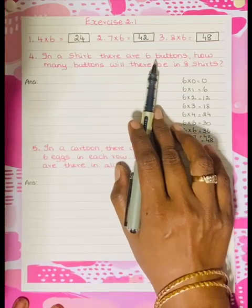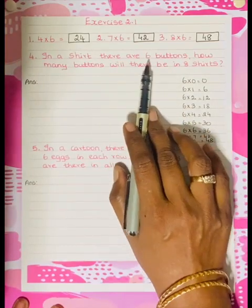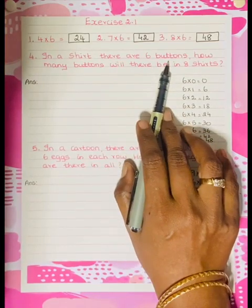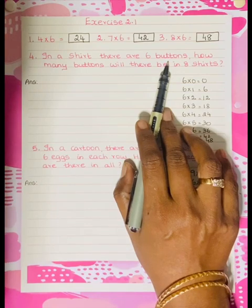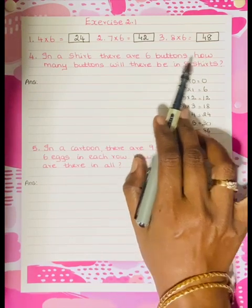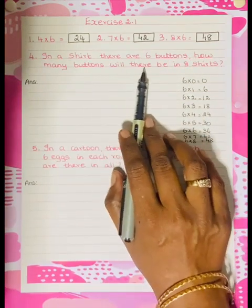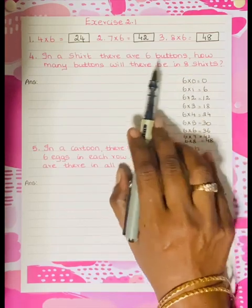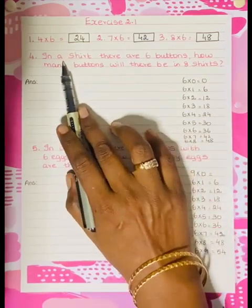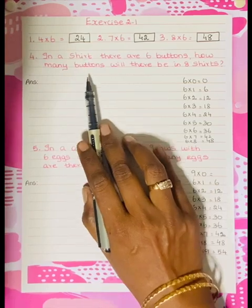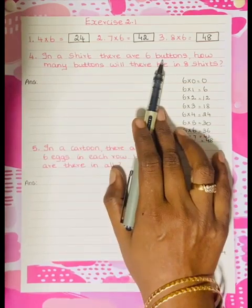In a shirt there are 6 buttons. So one shirt has 6 buttons.